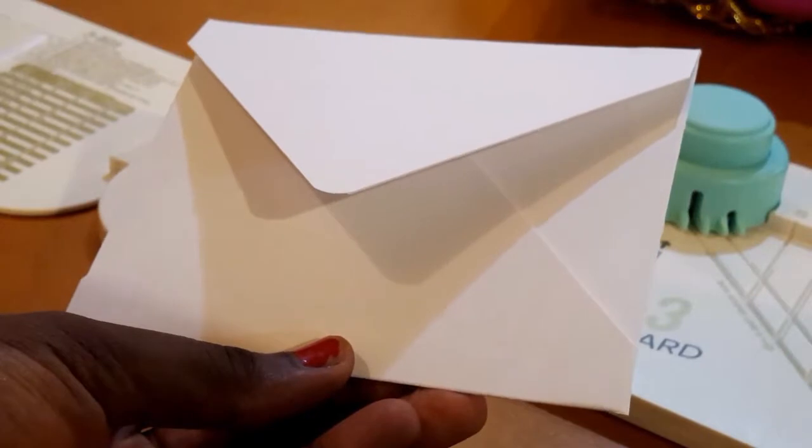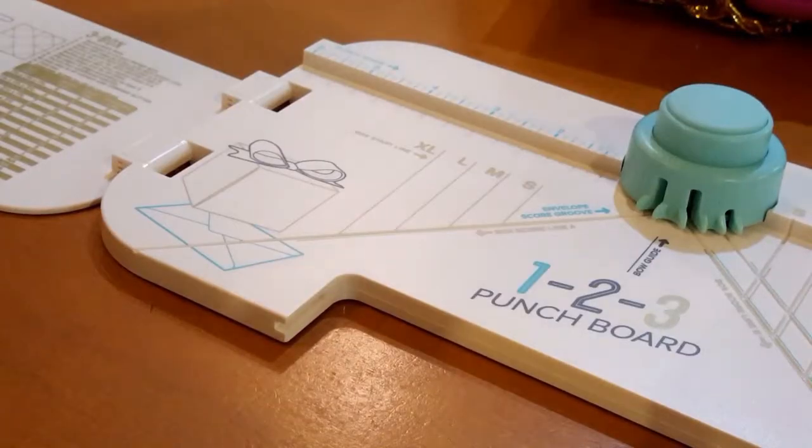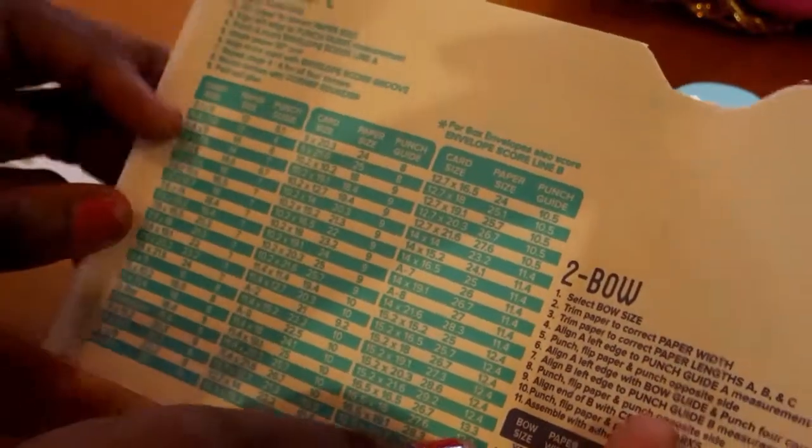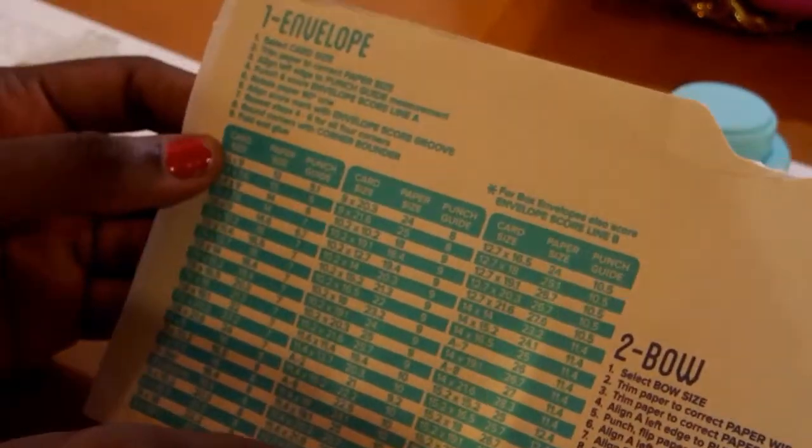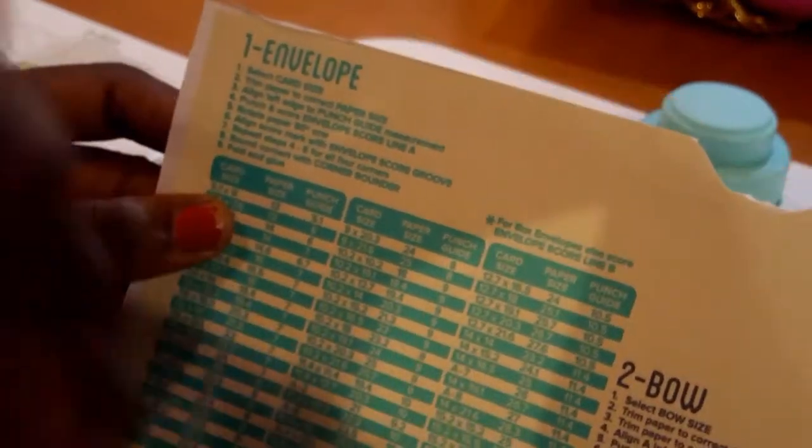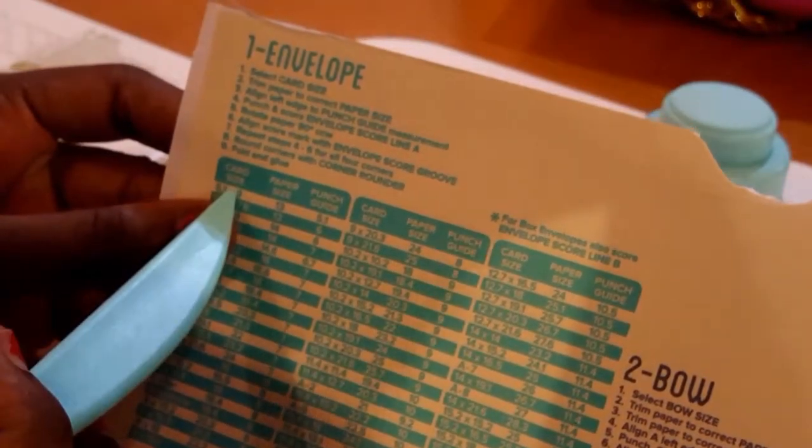So I'm going to be using my 123 punch board and the first thing that you would need is the envelope guide that comes with the machine. On the envelope guide at the top you will see card size, paper size, and punch guide.